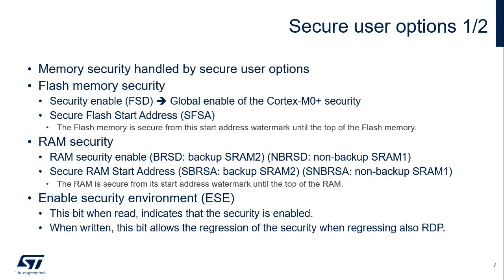The backup RAM security disable bit (BRSD) controls the security on the backup SRAM-2, and the secure backup RAM start address (SBRSA) defines the start address watermark from which the backup SRAM-2 is secure. The non-backup RAM security disable bit (NBRSD) enables security on SRAM-1, and the secure non-backup RAM start address (SNBRSA) defines its start address watermark. The enable security environment bit (ESE), when read, provides information on whether the device is secured; when written, it allows the regression of security at the same time as regressing RDP.